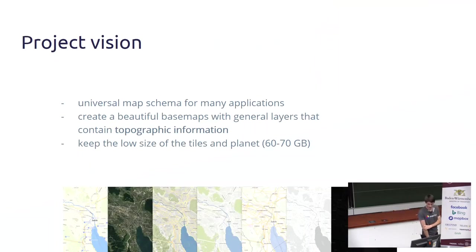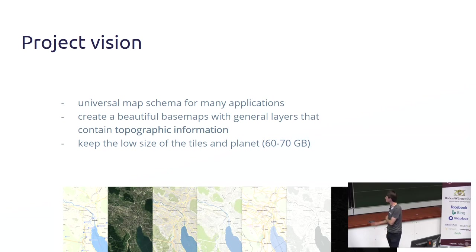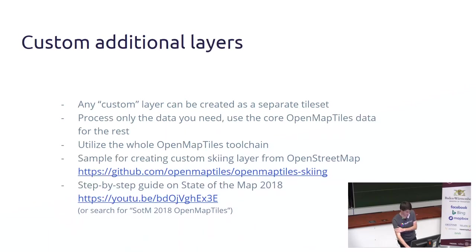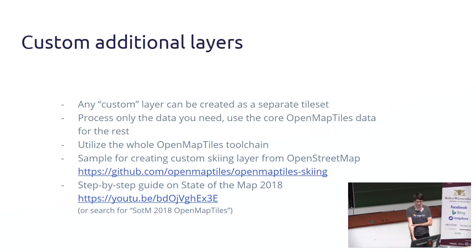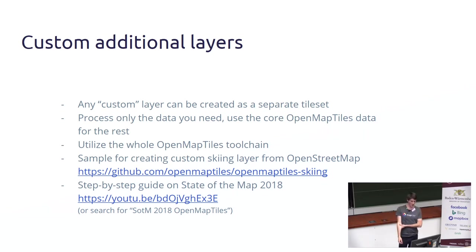There are also additional data layers — one of them is hillshading, digital elevation model, plus satellite imagery. The project vision is to keep the size low, around 60–70 gigabytes, and have just a base map containing the important topographic information. For the rest there will be custom additional layers. We already created one sample layer available on GitHub — it contains things for skiing like slopes and lifts. We are also thinking about other use cases.